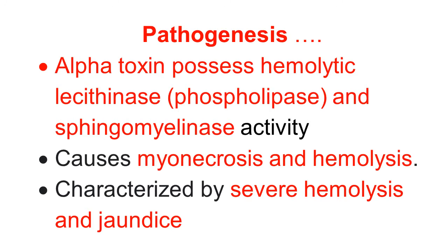The important alpha toxin possesses hemolytic lecithinase, that is phospholipase and sphingomyelinase activity. This causes serious consequences in the animal: myonecrosis, necrosis of the muscle, and hemolysis of the blood. This is characterized by clinical manifestation of severe hemolysis and jaundice in the animal. So, the synonym of the disease is yellow lamb disease, because the carcass of the lamb becomes yellow because of the jaundice.